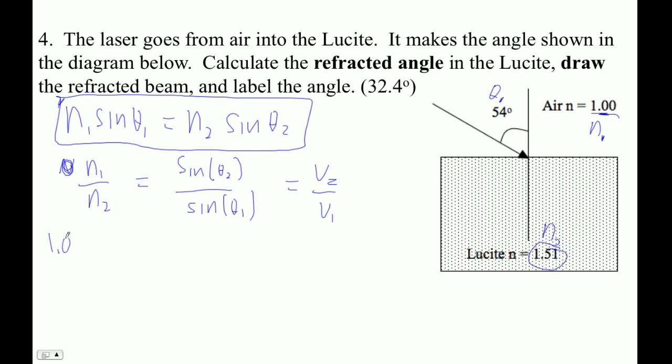So 1.00 sine of 54 equals 1.51 sine of, and then the refracted angle will be this guy here. This is theta 2, right? So I'm going to go 1... oh wait, hold on. Let me check my mode. I'm in degrees, good. Okay.